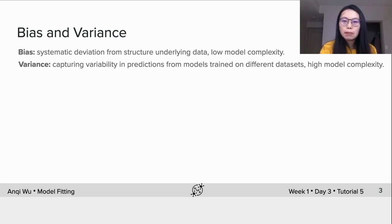Variance captures variability in predictions from models trained on different datasets, which is usually high when the model complexity is high. Here's some intuition.